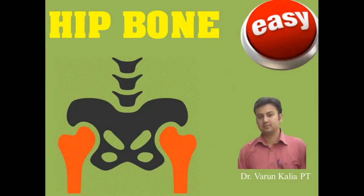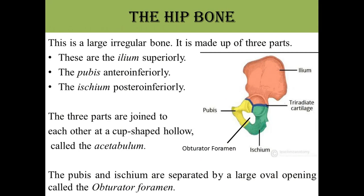Today we will study about the hip bone. The hip bone is a large irregular bone made up of three parts. It has no proper shape, unlike bones such as the femur, humerus, tibia, ulna, and radius which have proper shapes — the hip bone has no proper shape.